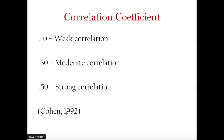These standards are of course arbitrary, based on criteria set by Cohen, and mostly apply to social sciences. In a discipline such as business, where things are more predictable and concrete, what is considered a strong correlation might be 0.7 and above. For social sciences, these are our criteria. We only describe the relationship as weak, moderate, or strong if they are significant — if they're not, there is no point describing them at all.